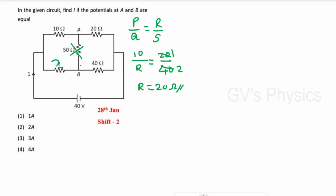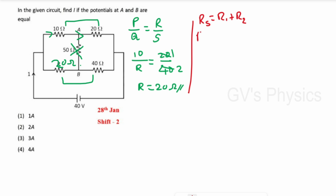With no current through A–B, the 10 ohm and 20 ohm are in series (Rs1 = 30 ohm), and the 20 ohm and 40 ohm are in series (Rs2 = 60 ohm). These two branches are connected in parallel.